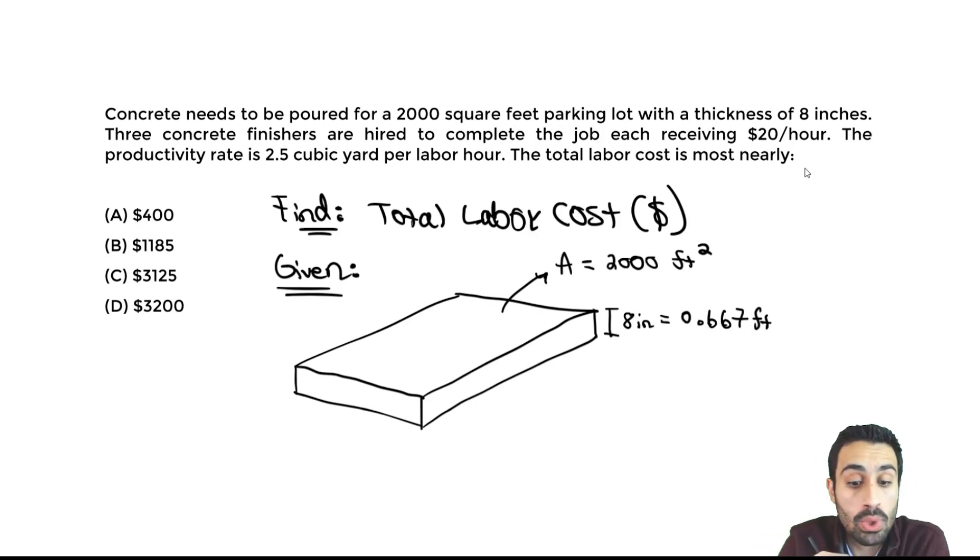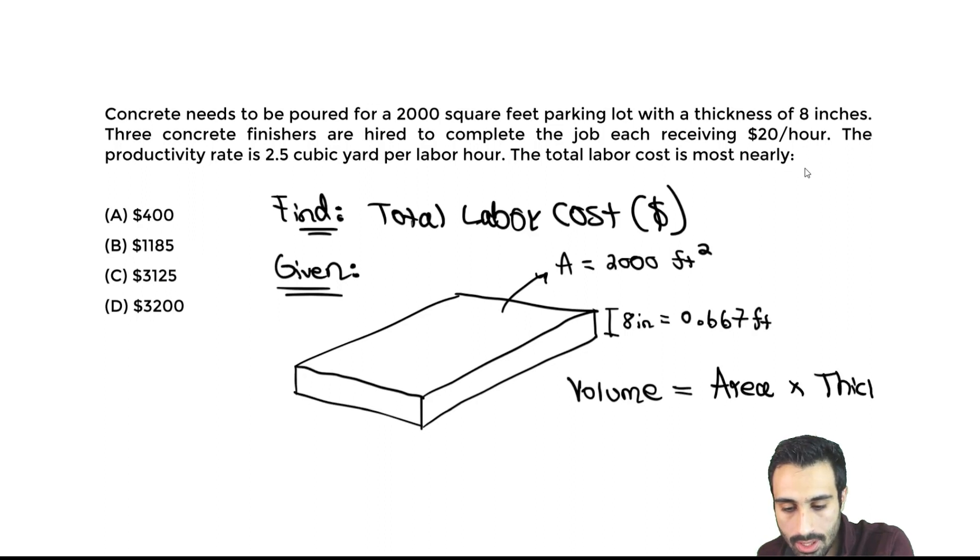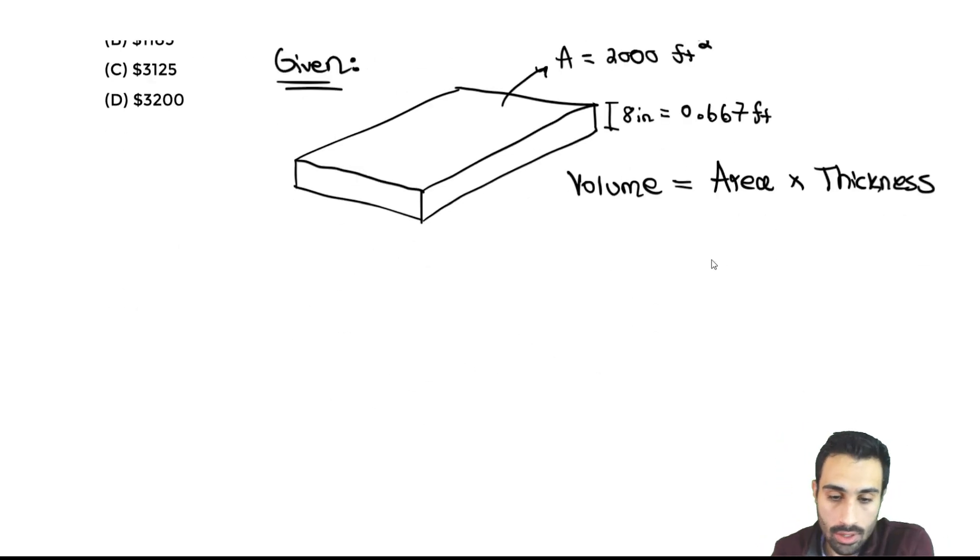The cross sectional area is 2,000 feet. We know that when we take the area times the depth, we get volume. Area times depth is volume. That's important for quantity estimating, that basic equation. In this case, I'll call it thickness, but you can think of it as depth as well. This will give us the volume. Let's find the volume of concrete that we need to pour.